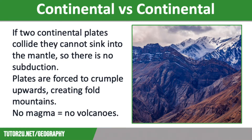When two plates collide they form a destructive margin. This is also known as a convergent margin as two plates are converging. The resulting effect is dependent on what sort of plates are colliding. There are three types of convergence.